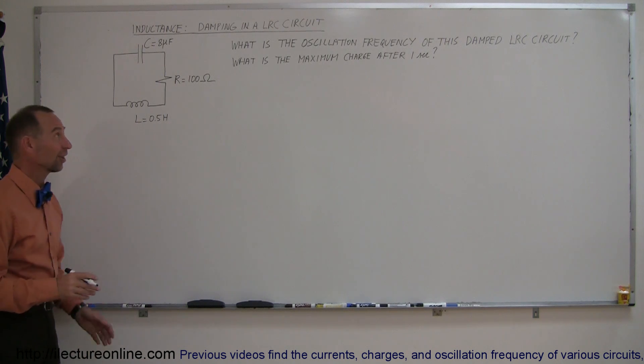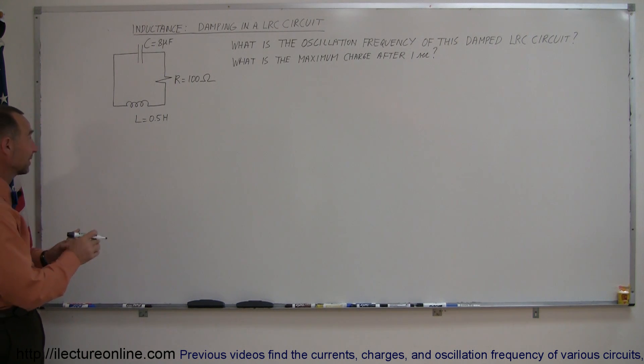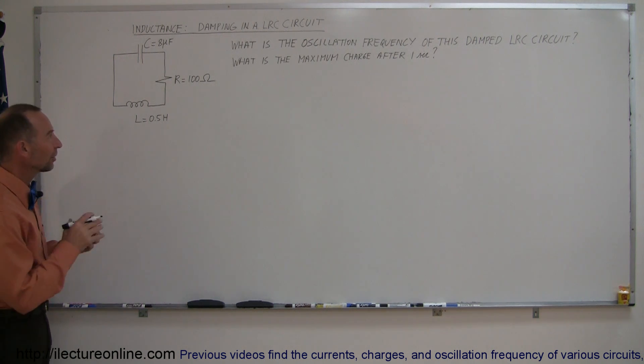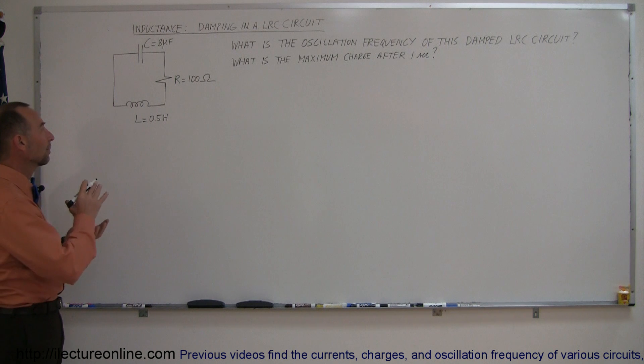Welcome to iLectron Online and here's another example of how to work with circuits that contain inductors and capacitors at the same time, but in this case we also snuck in a little resistor in there, a 100 ohm resistor. So we call this an LRC circuit and because of the resistor the oscillation between the capacitor and inductor will dampen over time, so let's take a look and see what this looks like.